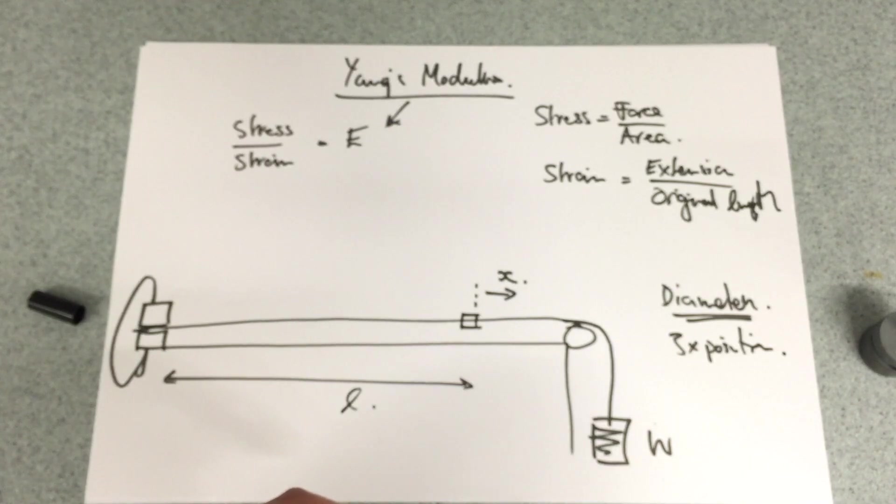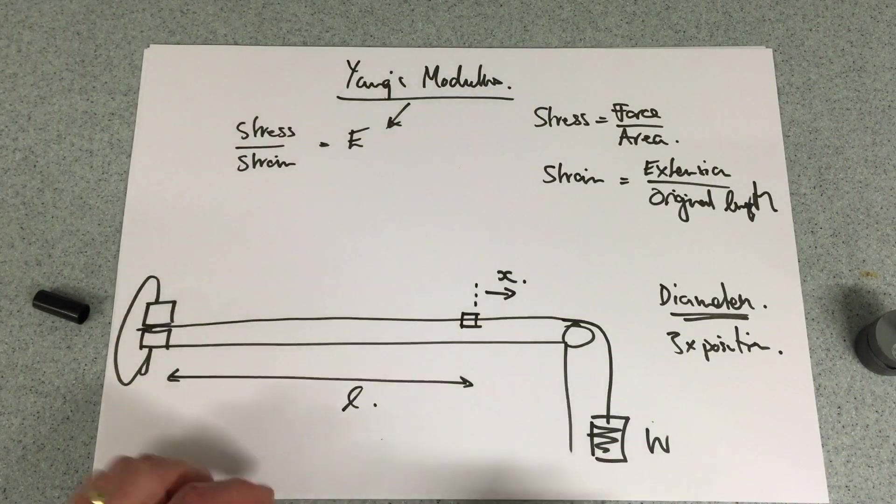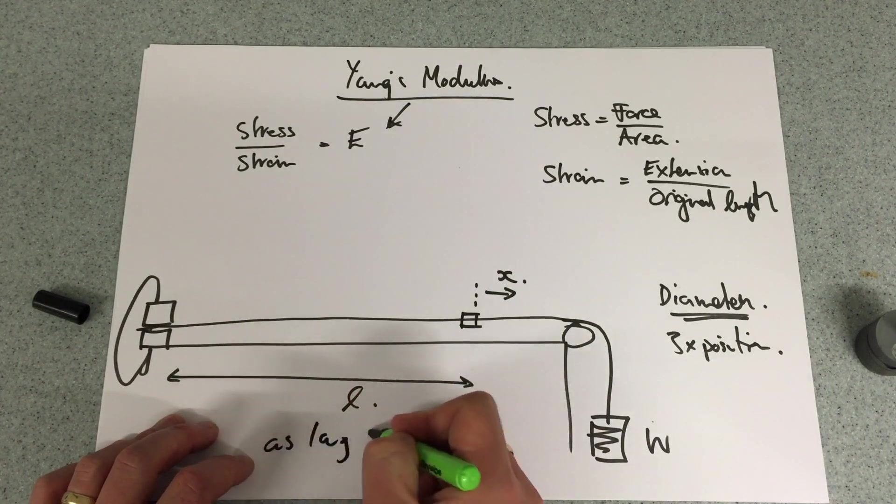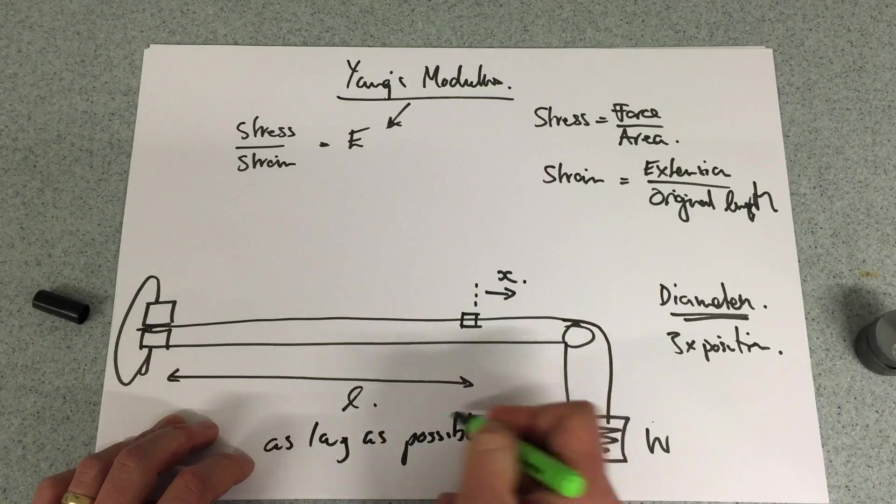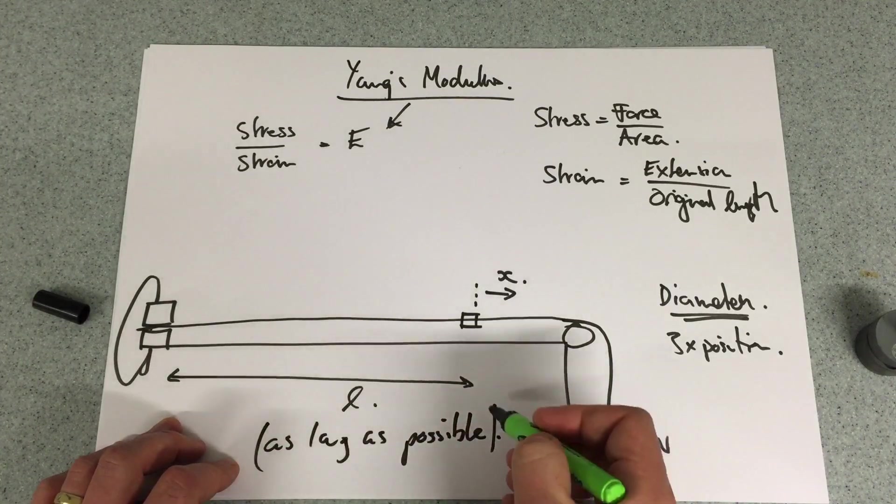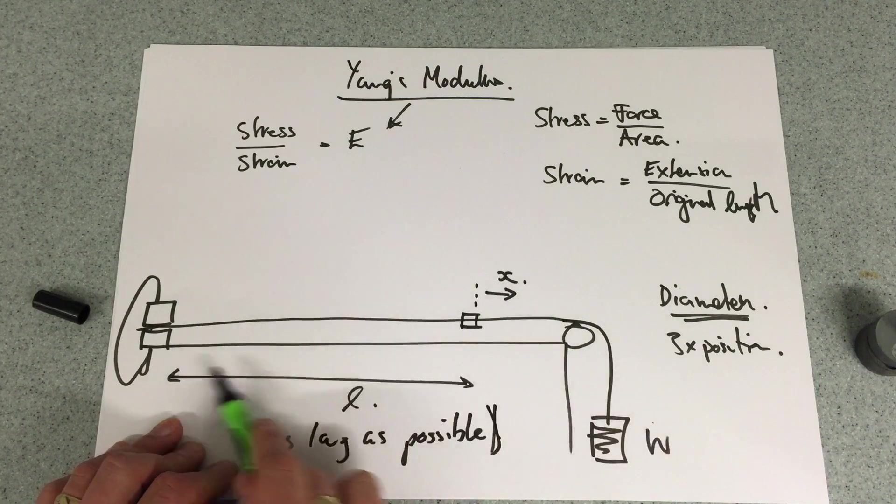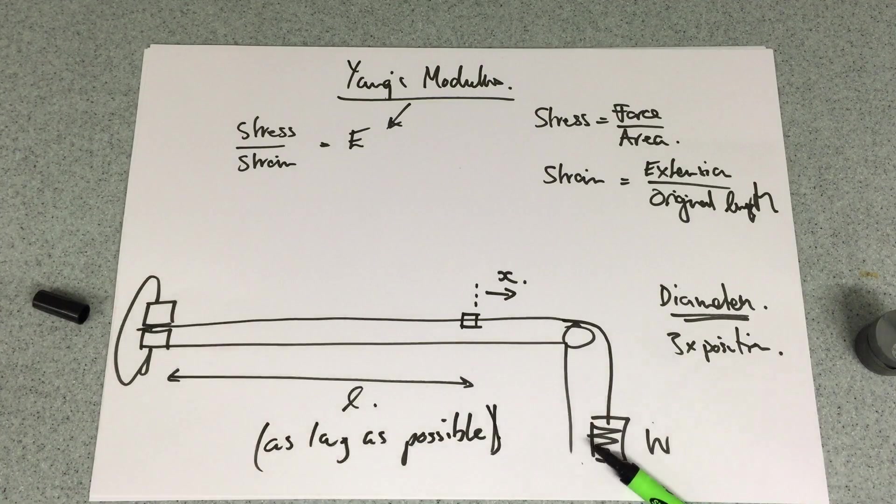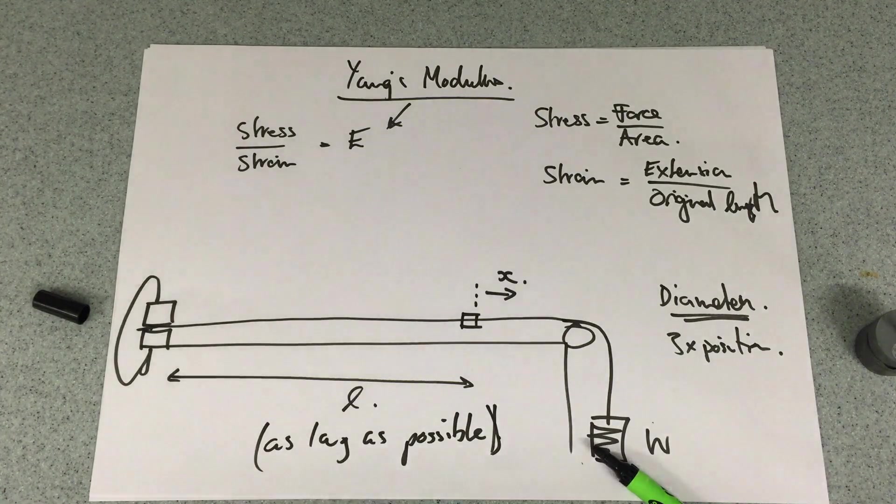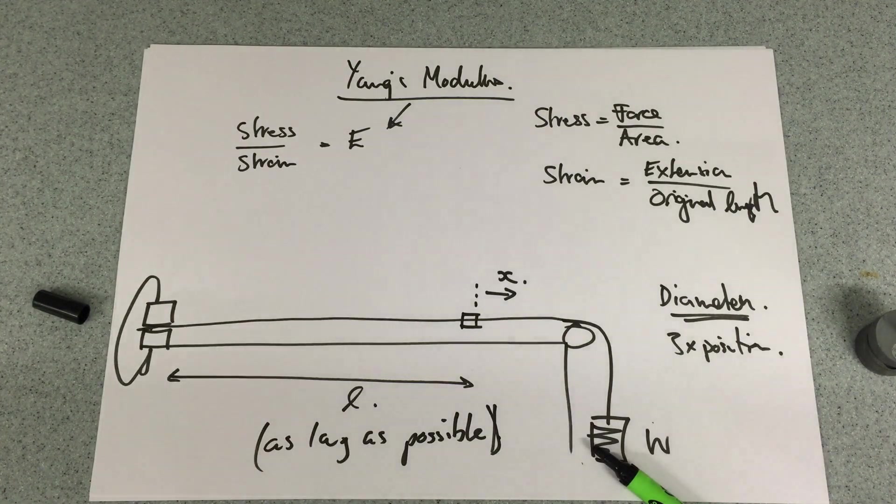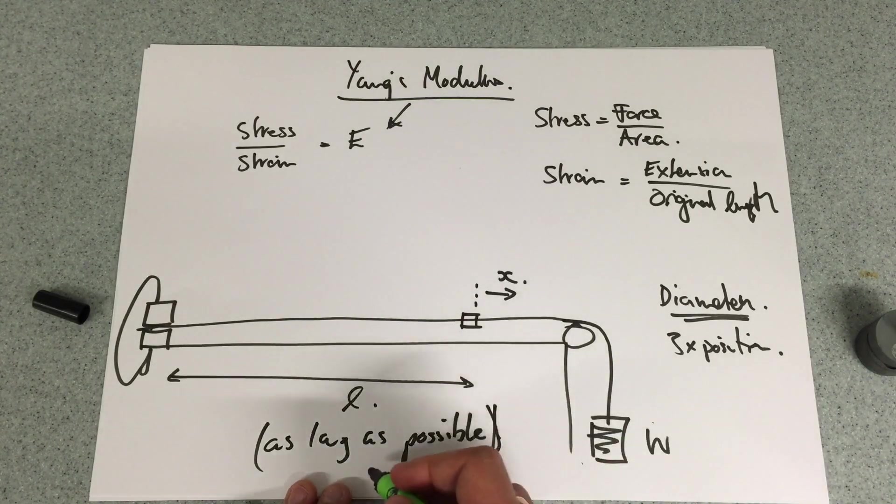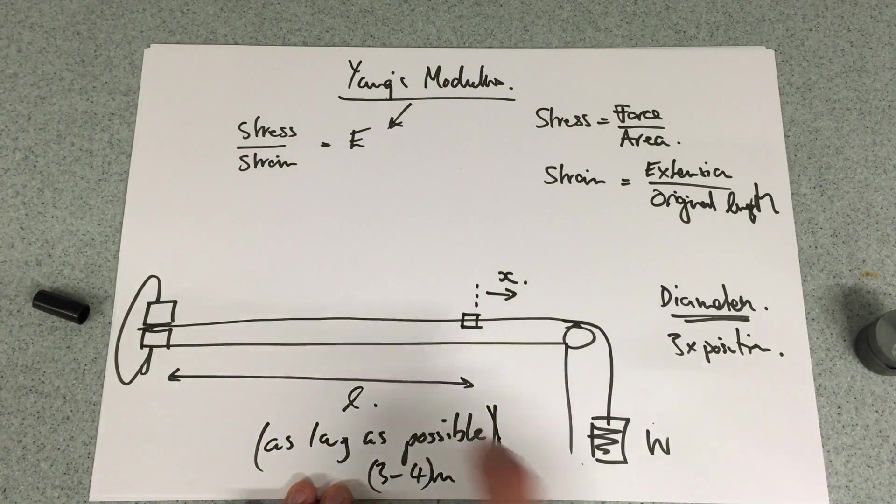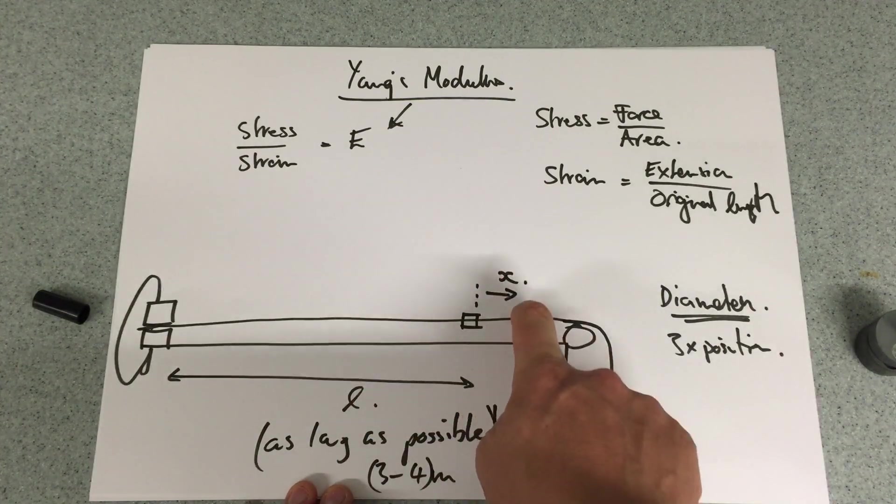We do it in three different positions because it's important to work out the diameter. Then we take the original length and I want this as long as possible because I know that this extension is going to be very small. If I make this as long as possible this will be bigger given for the same stress applied. So therefore we need to make it as long as possible. I'm going to stretch this out over about three to four meters. However it can be done much smaller but the bigger the length the more the extension the easier it is to read.